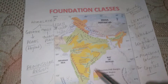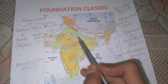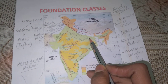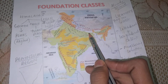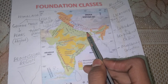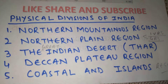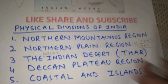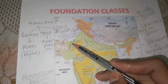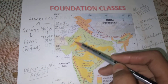Our second point is the Northern Plain region. This region is formed by the Indus Valley river system and the Ganga river system.